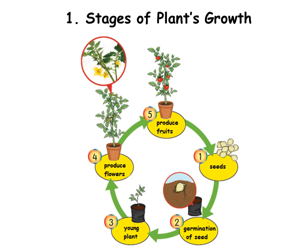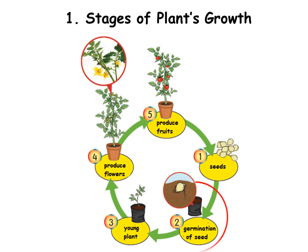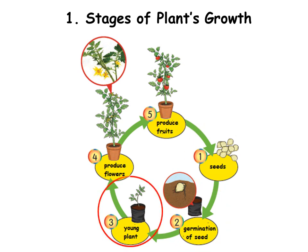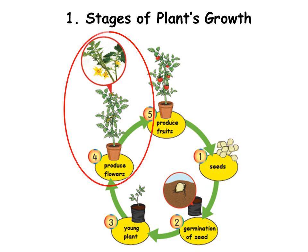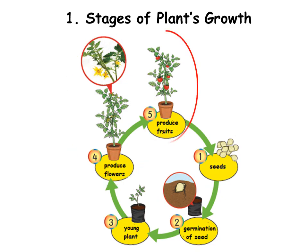Now, let's repeat the stages of plant's growth: seeds, germination of seed, young plant, produce flowers, produce fruits.